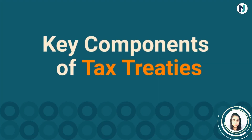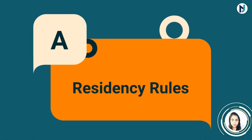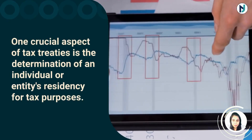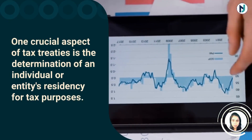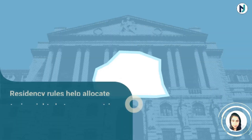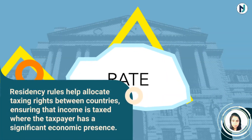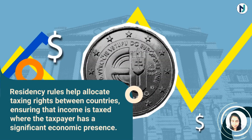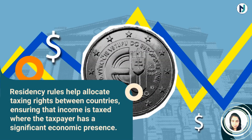Key Components of Tax Treaties — Residency Rule. One crucial aspect of tax treaties is the determination of an individual's or entity's residency for tax purposes. Residency rules help allocate taxing rights between countries, ensuring that income is taxed where the taxpayer has a significant economic presence.